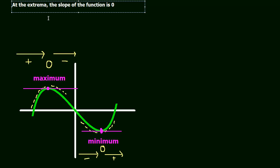What does that mean? Well, that's the same exact thing as saying the derivative of the function, so f'(x), is equal to zero. At this maximum and this minimum, the derivative must be equal to zero because the derivative is just slope, and the slope is zero.